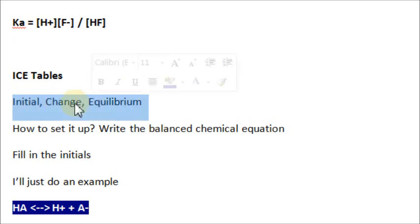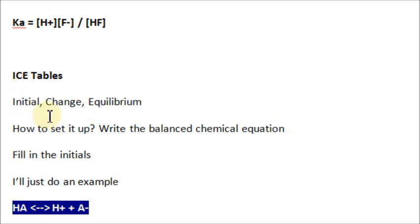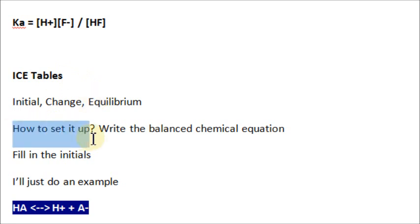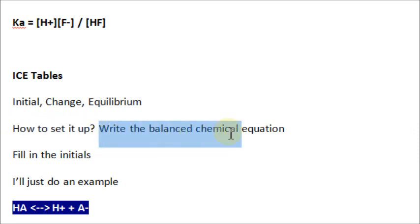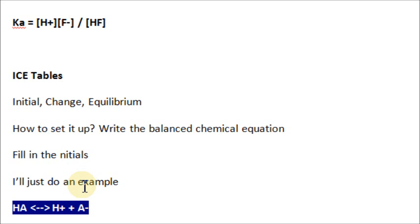Initial, Change, Equilibrium — that is what ICE stands for. As you may have inferred from the name, it's a table. The very first thing you need to do is write a balanced chemical equation. Then you need to make some columns.